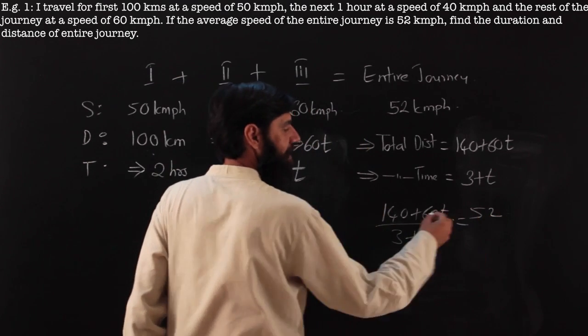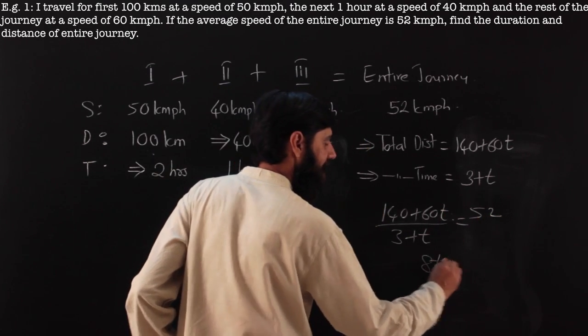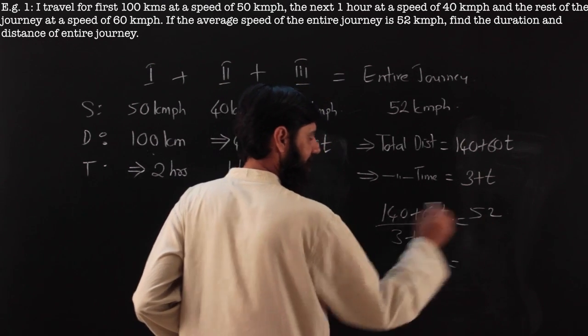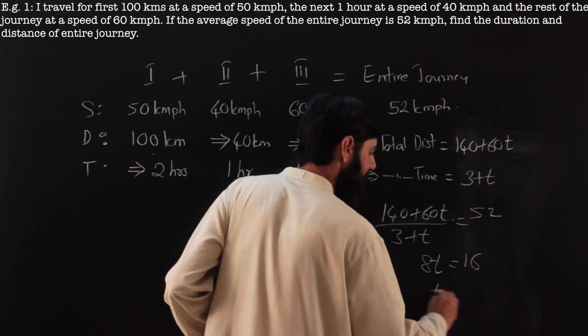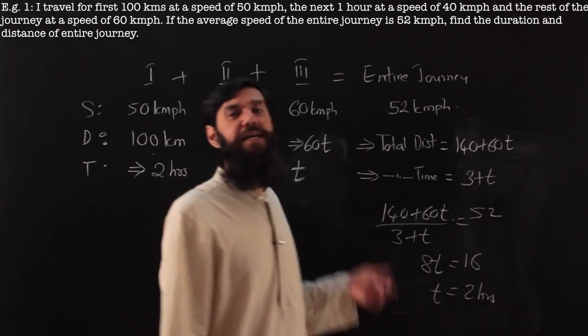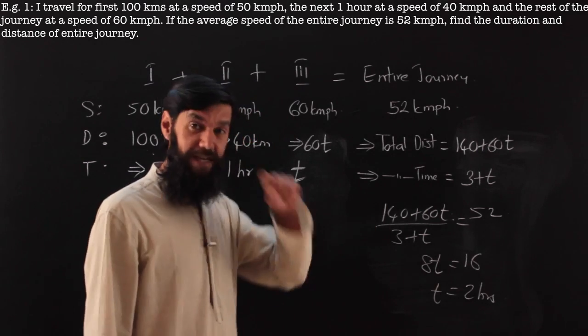This time I will have total distance by total time, 3 plus t, equals 52. So there is a 52t, 60t, that means 8t is left. 156 and for t is 16, so t is 2 hours.